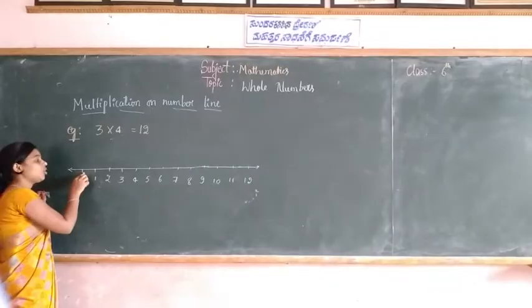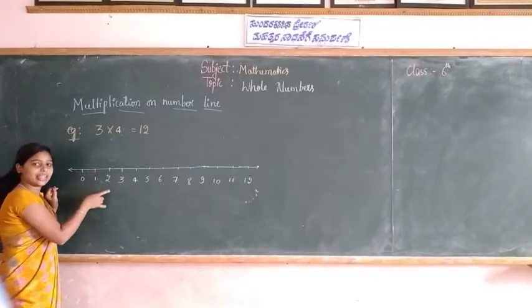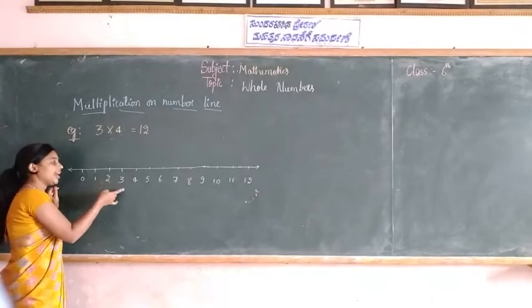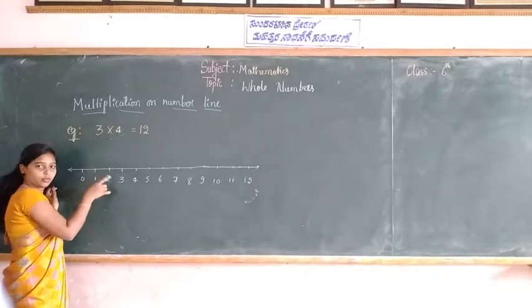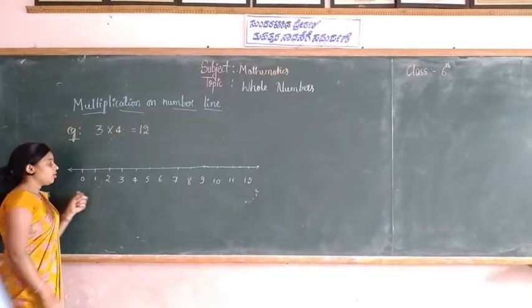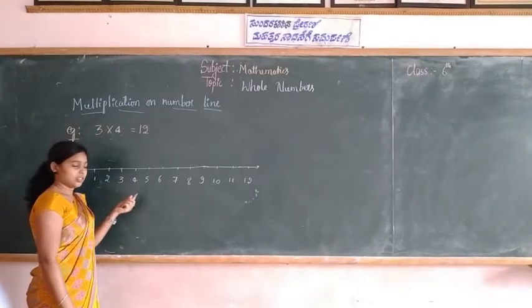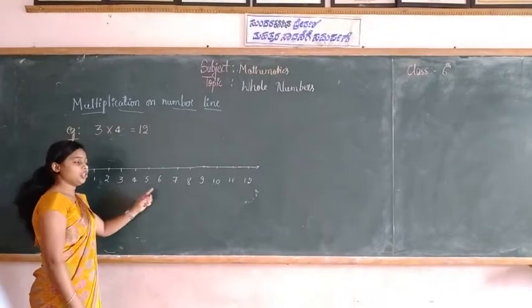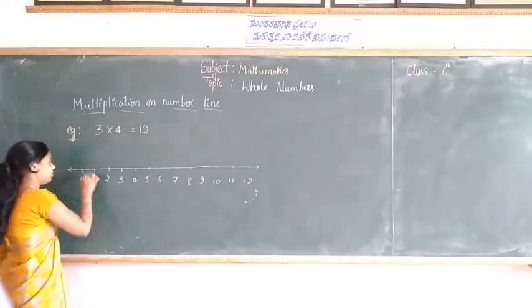Start from 0. Move 3 units at a time to the right, and make 4 moves. Where do you reach? Yes, obviously you will reach at 12.